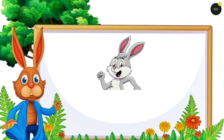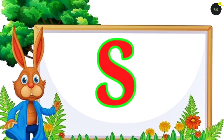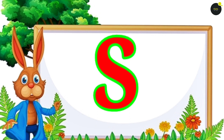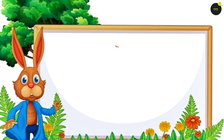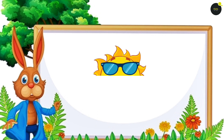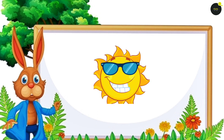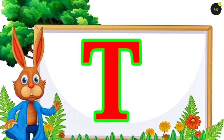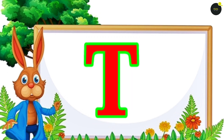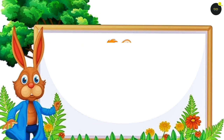Rabbit means Ghosla. S for Sun. Sun means Storage.